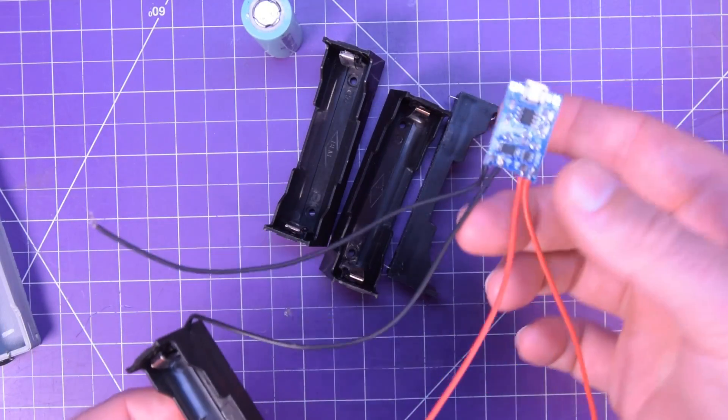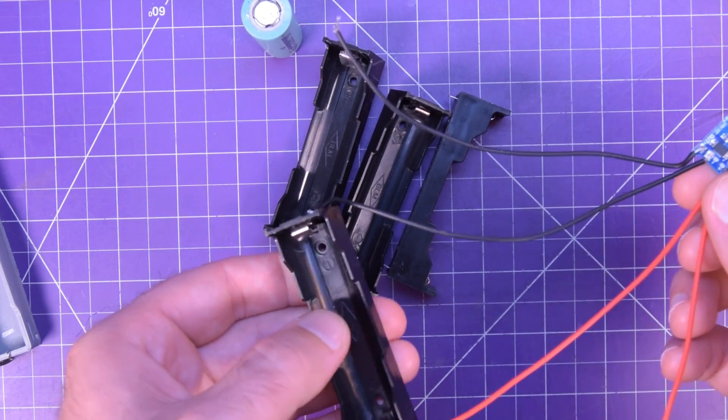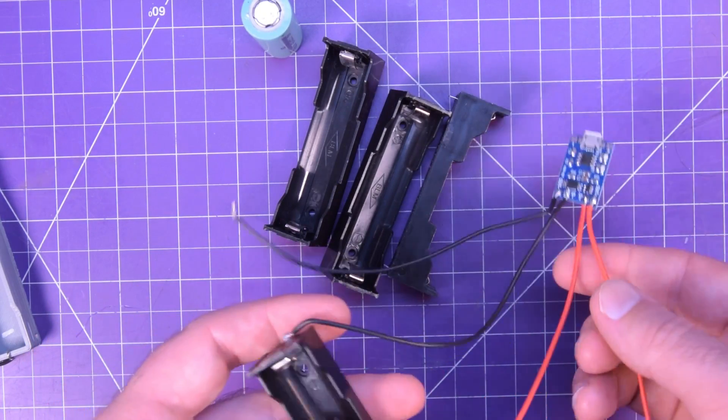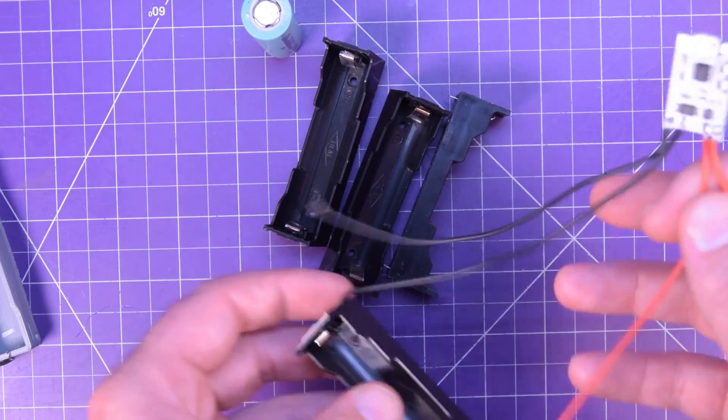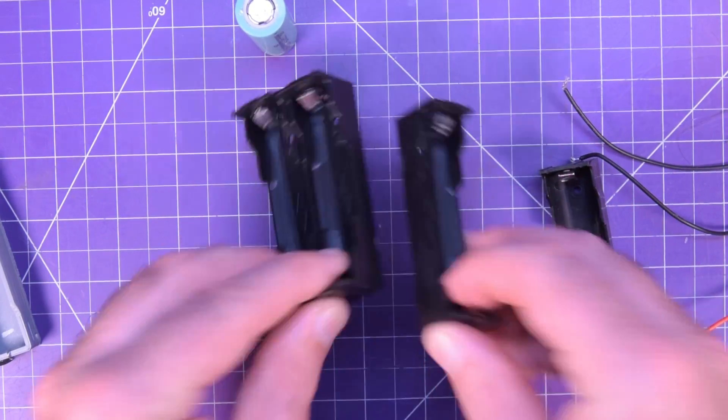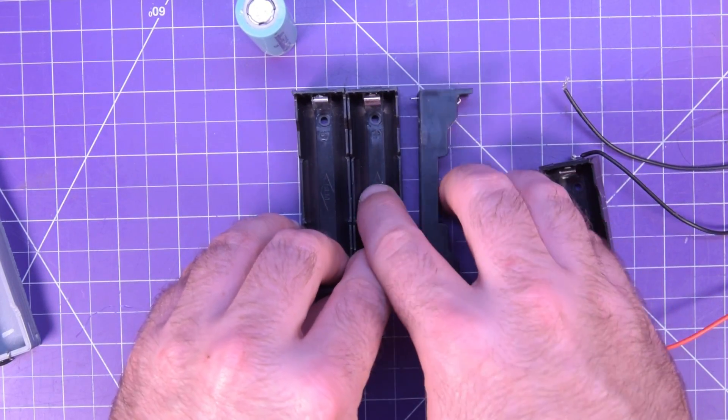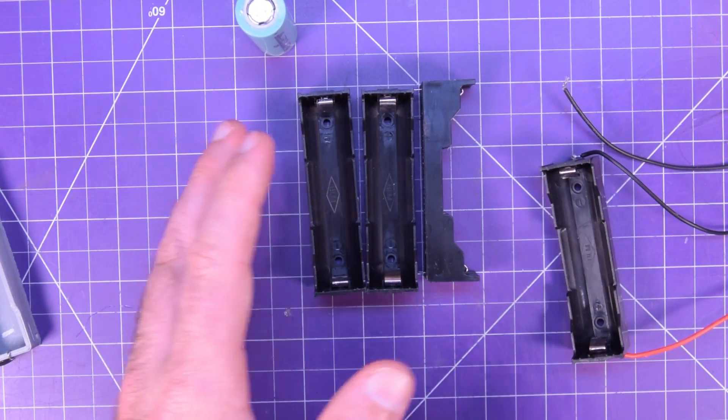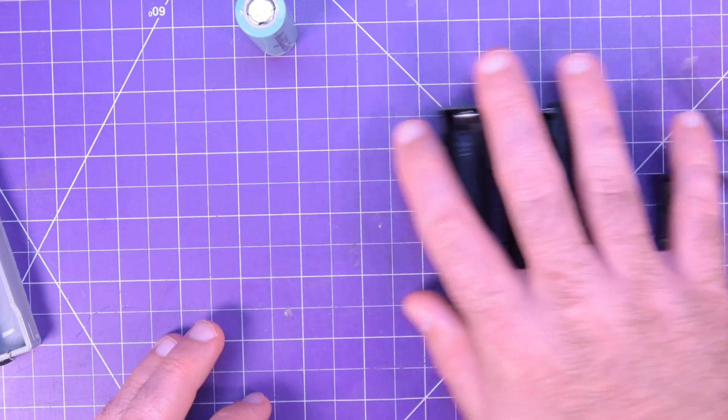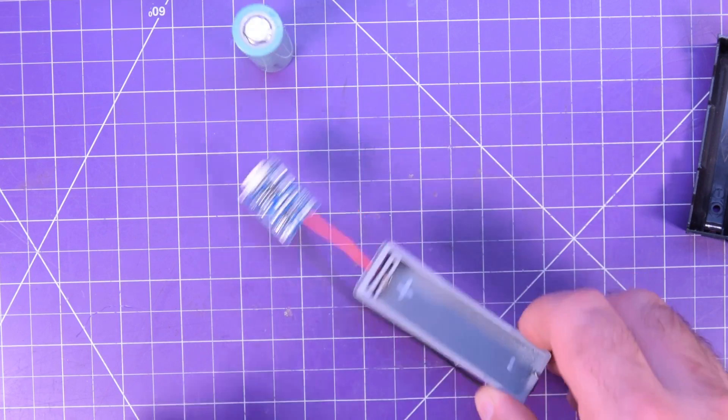So this is a TP4056 charger with protection and you put a lithium-ion cell in there and everything is good, or is it? What happens if you want to put three of these together? Well these things are not that expensive but they're also not that cheap. They're about 50 cents to a dollar each. If you have a 3D printer however, you can make something very similar for a fraction of the cost.